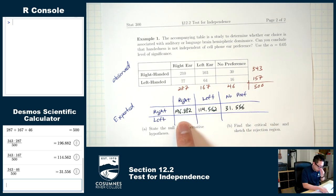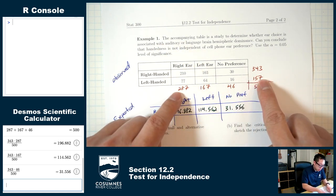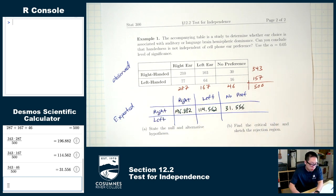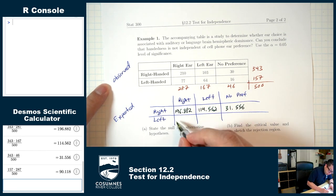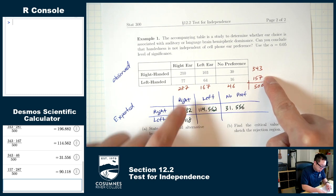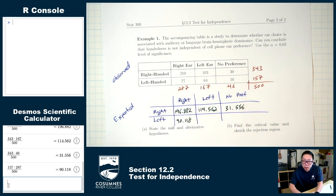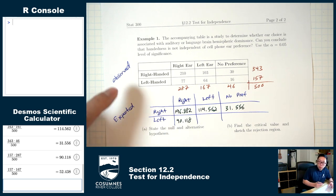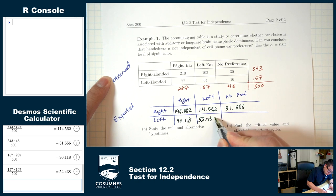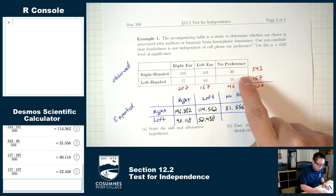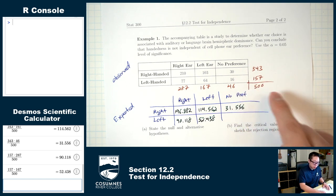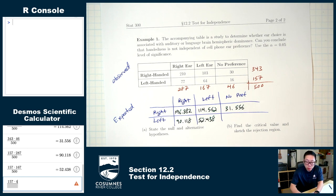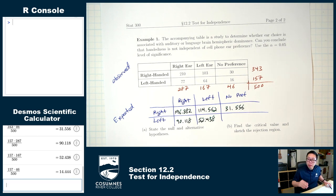Bottom left: row total 157 times column total 287 divided by 500 equals 90.118. Next: 157 times 167 divided by 500 equals 52.438. Last one: 157 times 46 divided by 500 equals 14.444. And those are our expected numbers.